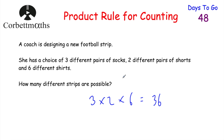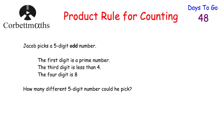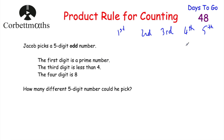That's a much easier way of doing this rather than having to list all 36 strips, which would take quite a long time. If you got that, well done. Our next question: Jacob picks a five-digit odd number. The first digit is a prime number, the third digit is less than four, and the fourth digit is eight. How many different five-digit numbers could he pick? There are five digits — first, second, third, fourth, and fifth. Let's write down how many possible choices he has for each digit. For the first digit, it's a prime number, so the prime numbers are 2, 3, 5, 7 — that gives Jacob four different choices.